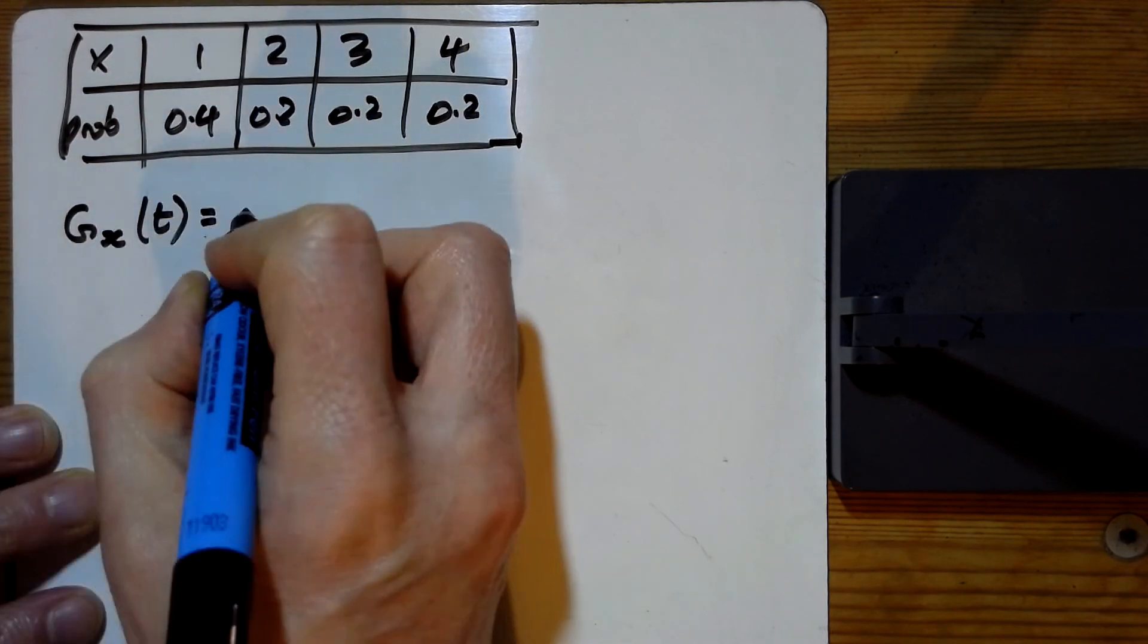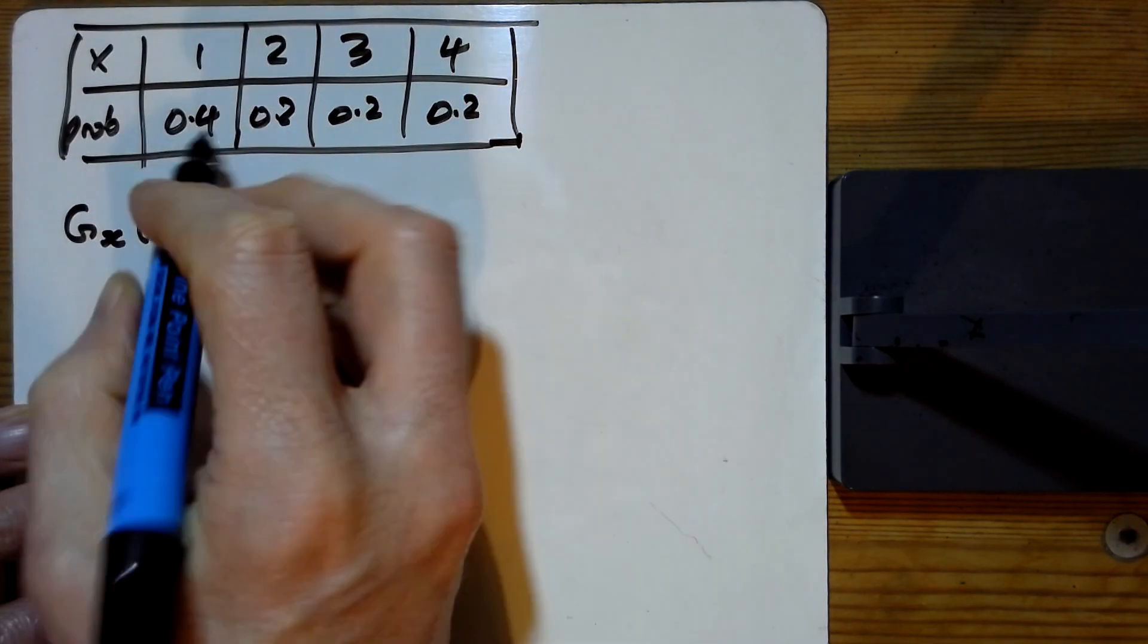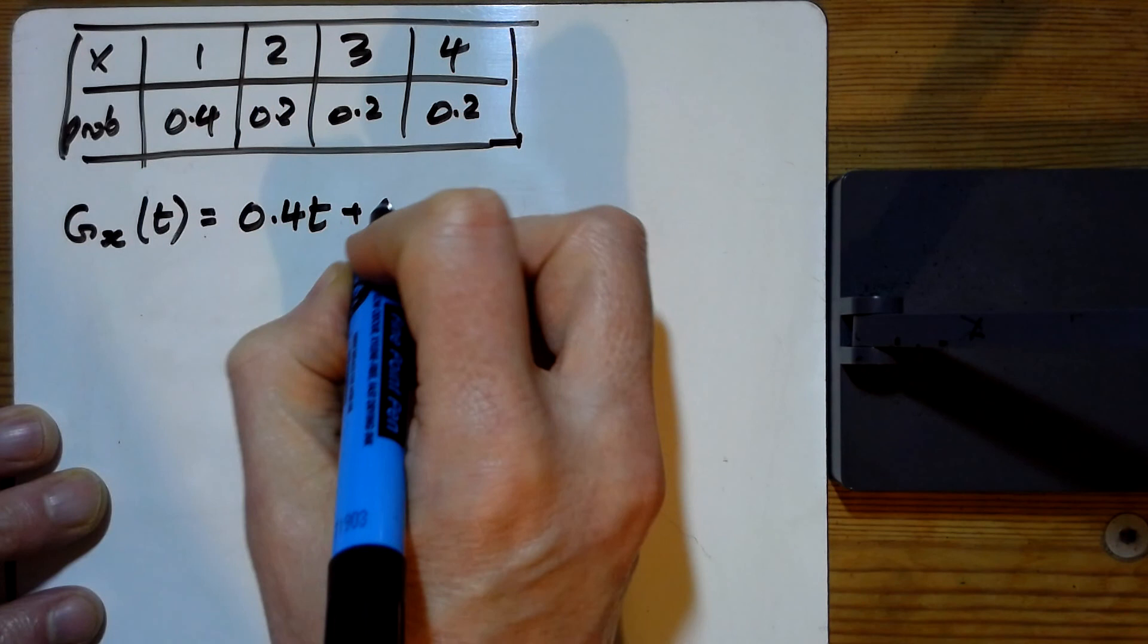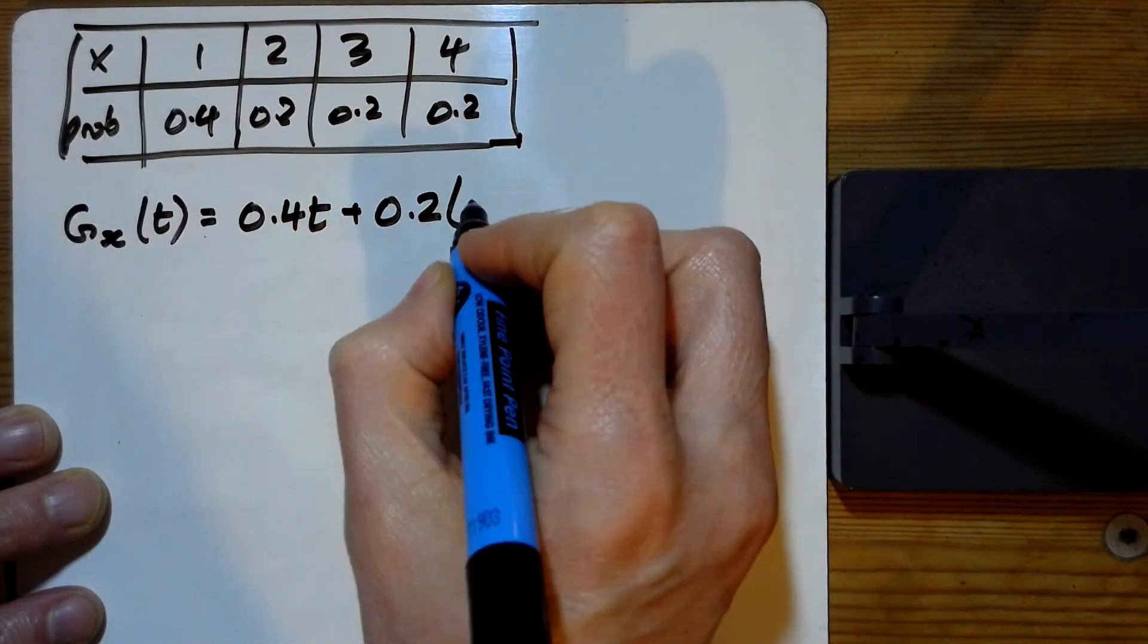And what have we got? So there's no zeros here at all. So I've just got 0.4t for that one there. And then 0.2. Shall I write them all out? t squared add t cubed add t to the four.